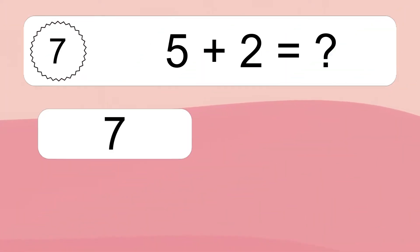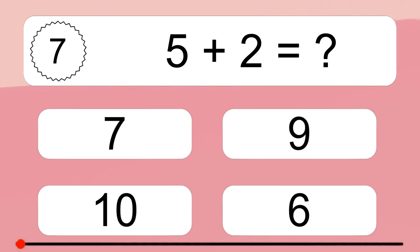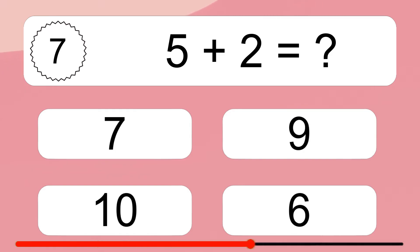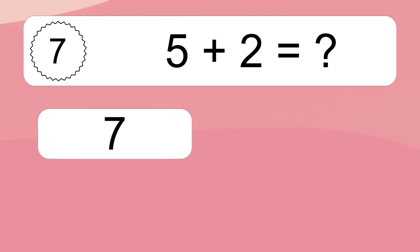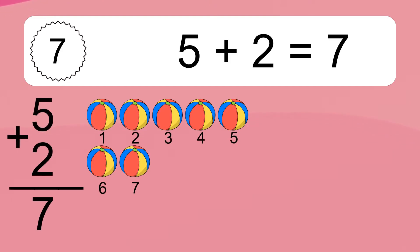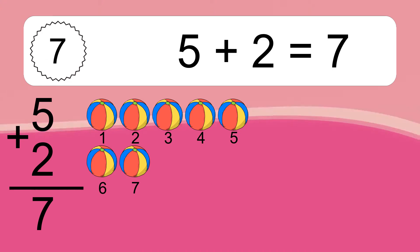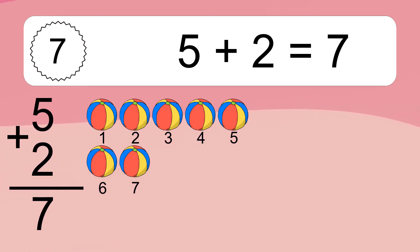5 plus 2 equals what? 5 plus 2 equals 7. Let's count it. 1, 2, 3, 4, 5, 6, 7.